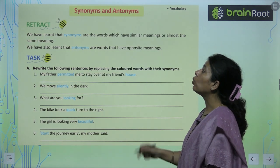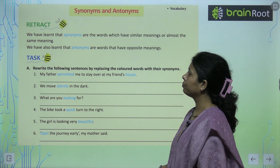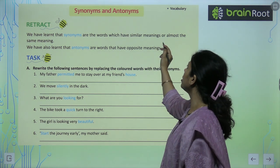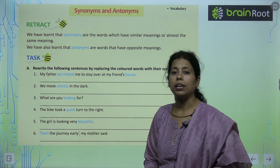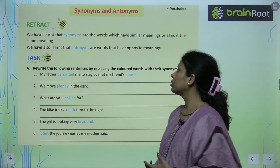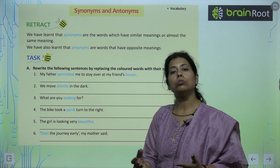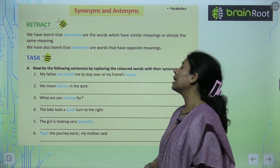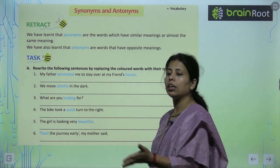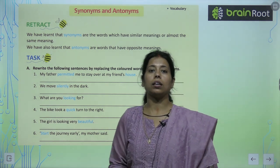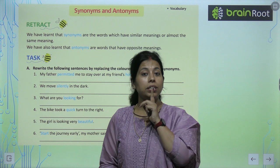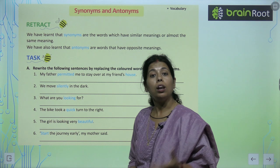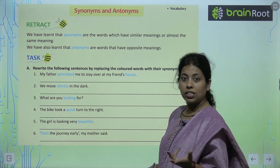Synonyms and antonyms. We have learned that synonyms are words which have similar or almost the same meaning. Antonyms are words that have opposite meaning. Ek shabd ke bahut saare synonyms ho sakte hain — for example: be quiet, be silenced. Beautiful, lovely, gorgeous.